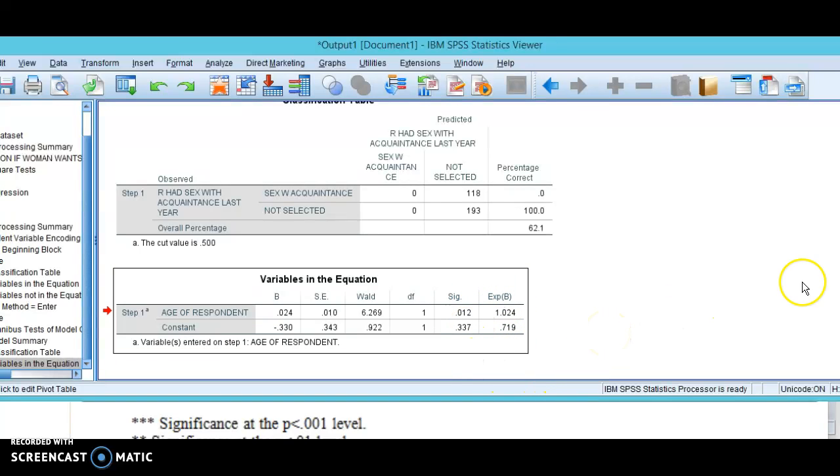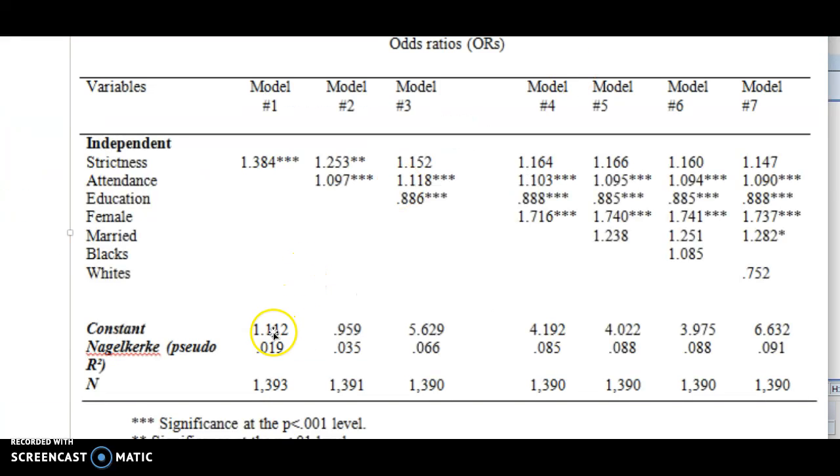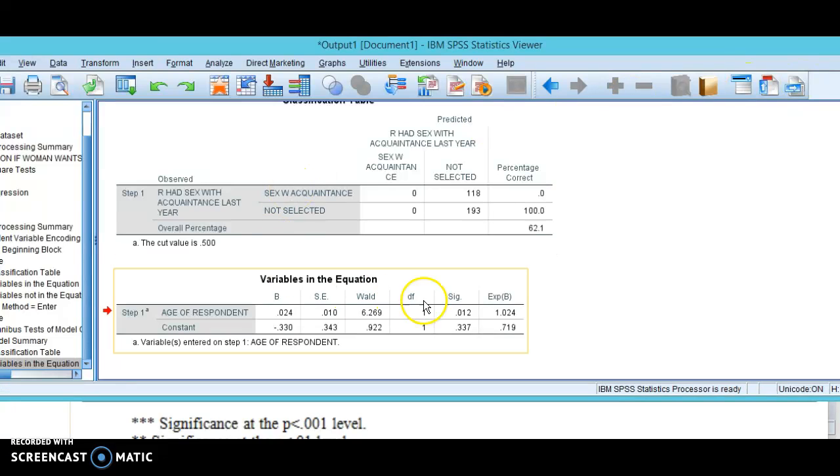Down here you go all the way to this area at the bottom that says variables in the equation, and it shows constant and age of respondent and the exponential B's and the significance levels. Your constant goes right above the Nagelkirche value here in the table. Constant doesn't mean a whole lot because of the kind of analyses you're doing in logistic regression. We report it anyway just for reference but you don't actually have to interpret it.